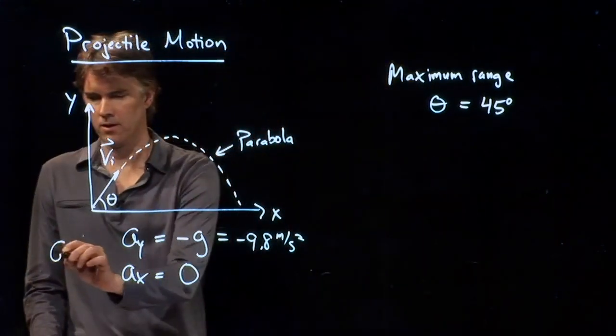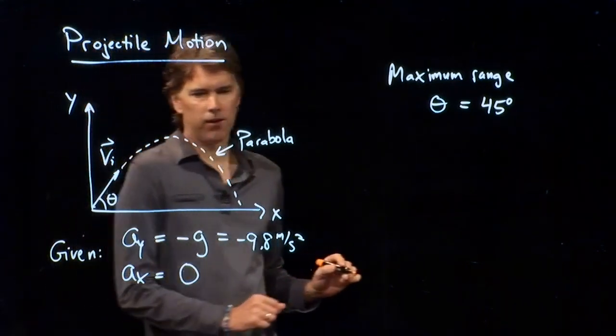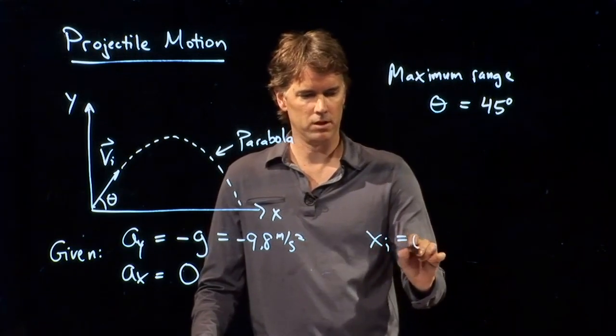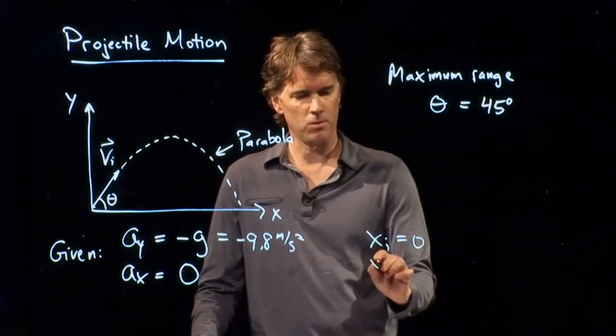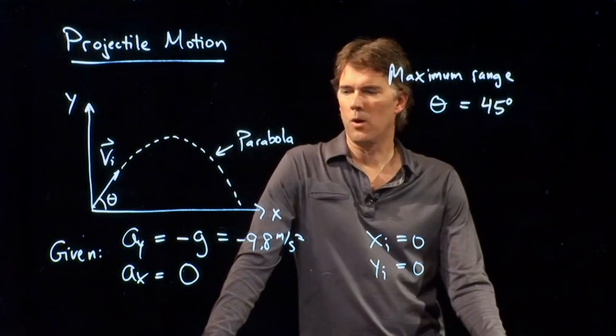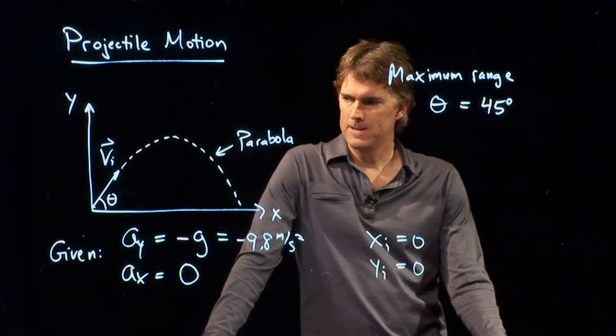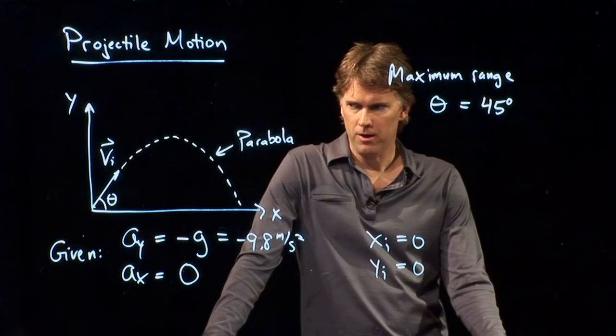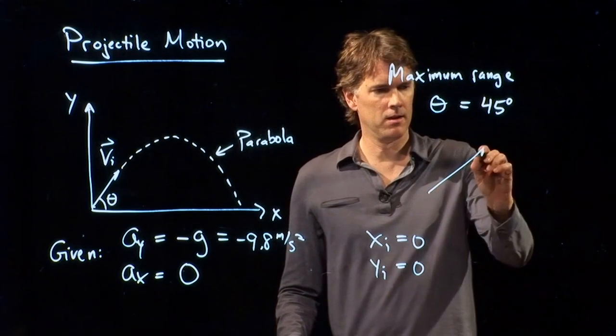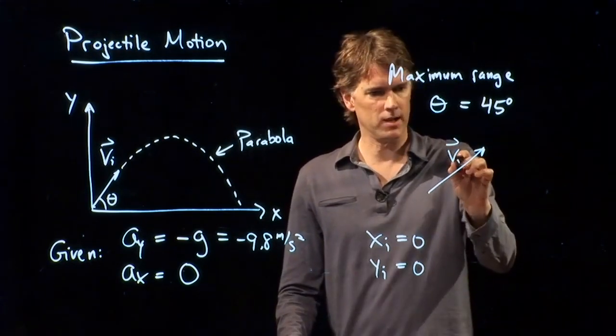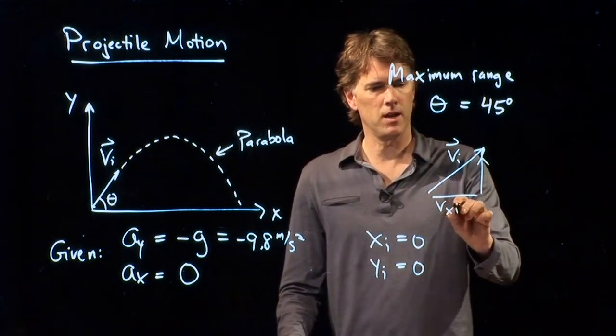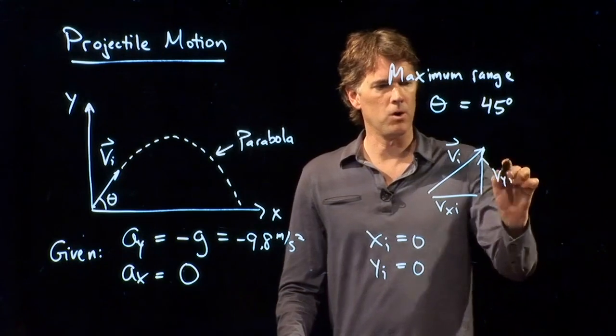What else do we know? These are some of the givens. We can say x initial is zero. We can say that y initial is also zero. It starts there at the origin. And then we can do one more thing. We can break up the velocity, v, that initial velocity, into components. One in that direction and one in that direction.